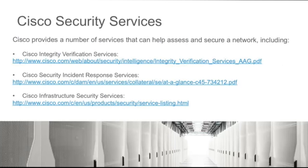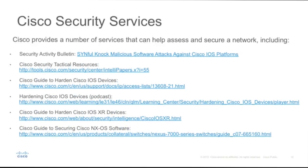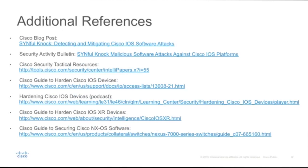Cisco also offers a few services that can help customers assess and secure their network. These include integrity verification services, incident response, and infrastructure security services, to name a few. The links provided in this slide give additional information about these services and the capabilities covered in this presentation, as well as additional hardening guides, our security blog, tactical resources, and other best practices.